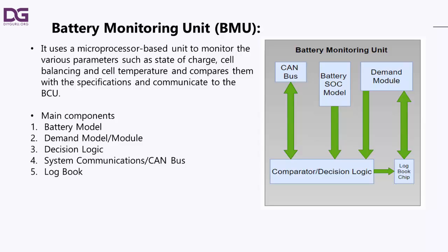This allows the vehicle to limp home at half power using the other good half of the battery. Outputs from the models are sent to the vehicle display, also using the CAN bus. The demand model is similar in some respects to the battery model in that it contains a reference model with all the tolerances and limits relevant to the various parameters monitored by the battery model.